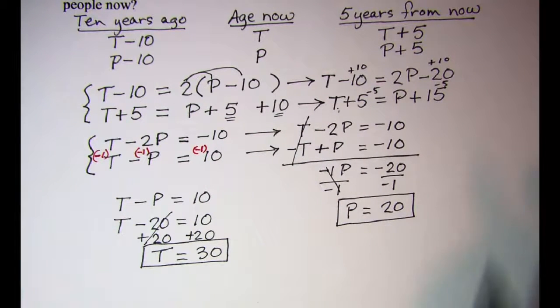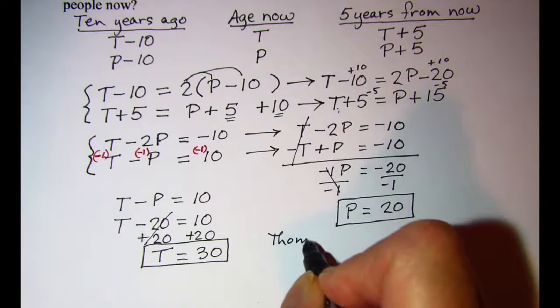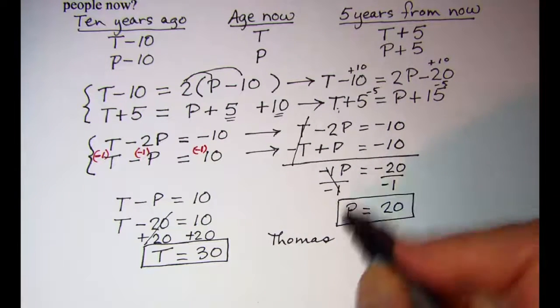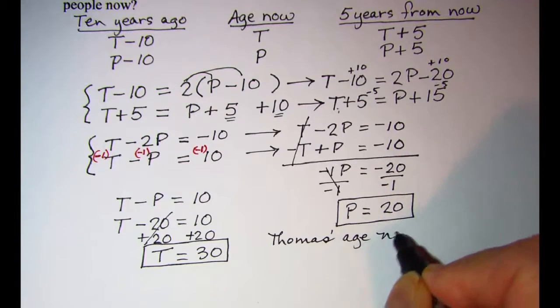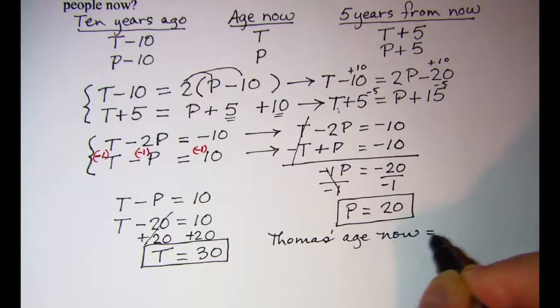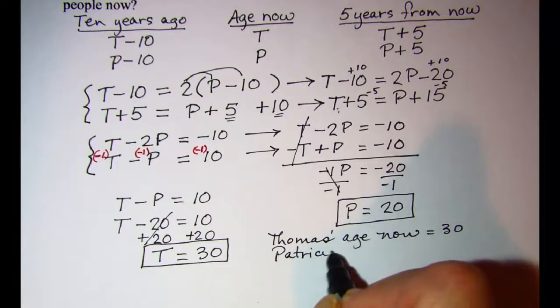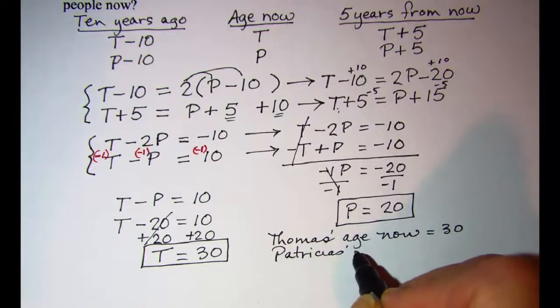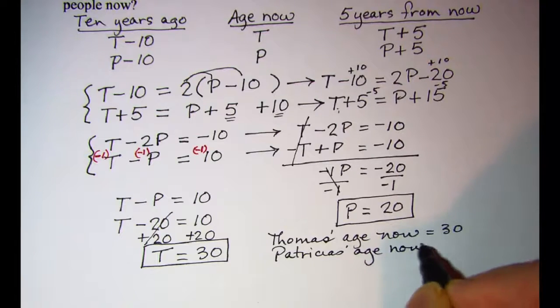So my final step then is to write the answer. Thomas's age now is thirty. And Patricia's age now is twenty.